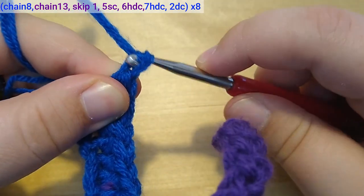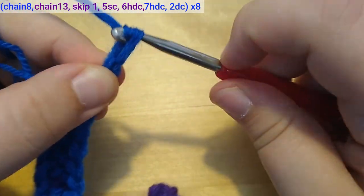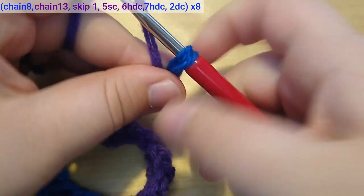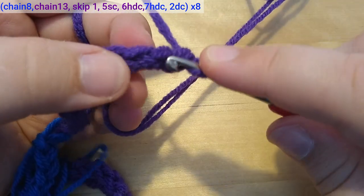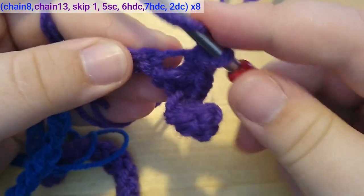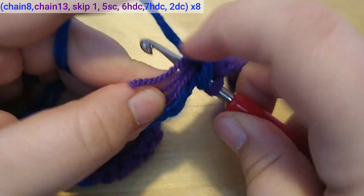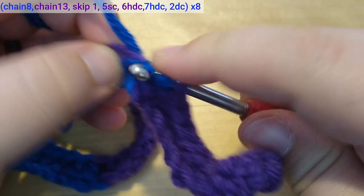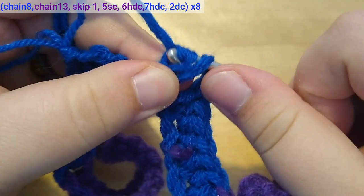The next tentacle is made in the same way, so I chain 8, switch to purple and chain the other 13, then I skip 1, make 5 single crochets and 6 half double crochets before switching back to blue, making the other 7 half double crochets and the 2 double crochets.